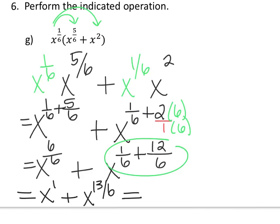So x to the 6/6 simplifies to x to the 1st, which is just x, plus x to the 13/6. We can't add this further because although they have the same base they do not have the same exponent — they would need the same exponent and base to be like terms. So our final answer is x plus x raised to the 13/6.